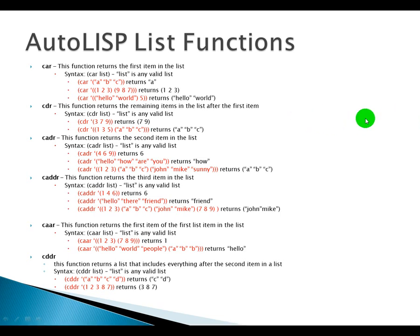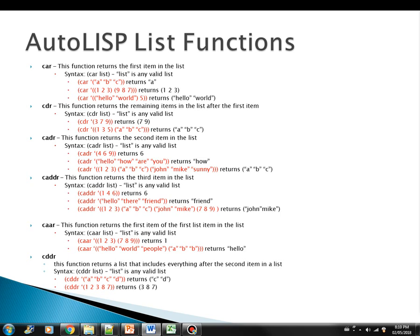In this lesson we will learn the list functions. There are quite a number of functions in AutoLISP that are used to manipulate a list. These functions can be retrieving items, substituting items, looping through the items, or even reversing items in the list, and many more. We will go through each one of them and be familiar with their specific functionalities. And in the practical section, you will see how they work in action.